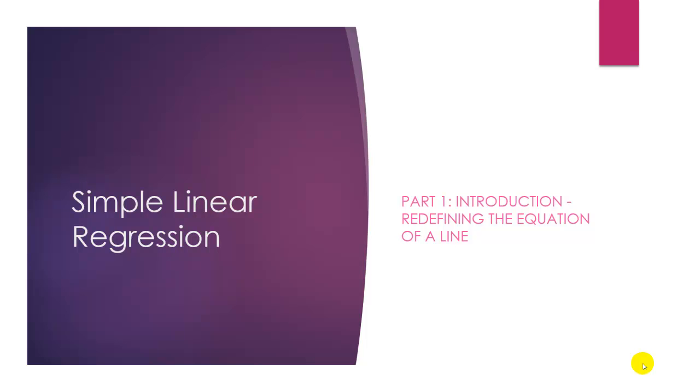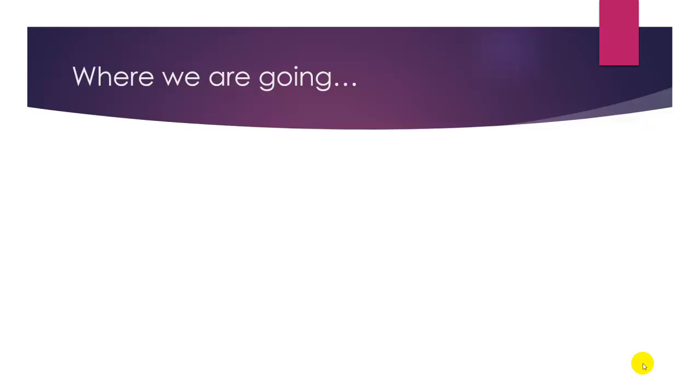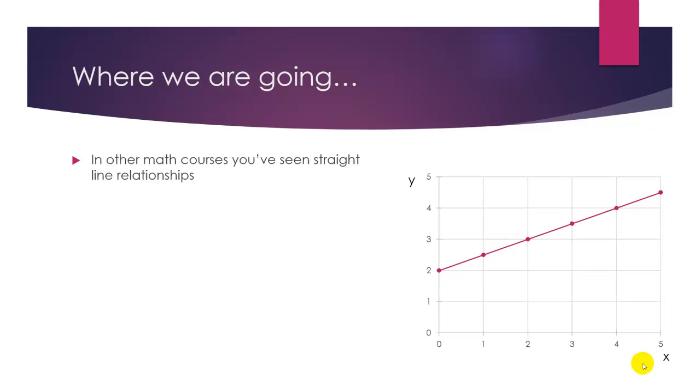Parts 2 and 3 will provide details on the actual regression technique for estimating and investigating the straight line using a sample of data. In other math courses, you've seen straight line relationships. Simple linear regression is about finding an equation for the straight line and understanding its meaning.